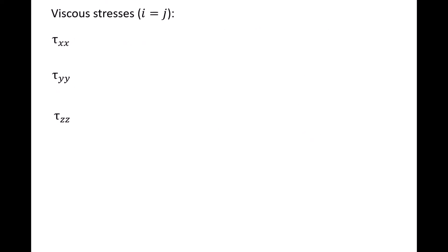For the viscous stresses where i and j are the same, we have the following relationships for tau_xx, tau_yy, and tau_zz. Tau_xx equals 2 times the viscosity times epsilon_xx, tau_yy equals 2 times the viscosity times epsilon_yy, and tau_zz equals 2 times the viscosity times epsilon_zz. In a prior video, we derived expressions for the linear strain rate in terms of velocity gradients: epsilon_xx equals partial u/partial x, epsilon_yy equals partial v/partial y, and epsilon_zz equals partial w/partial z.